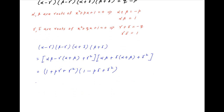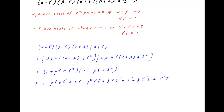Opening this up, we get 1 minus p·delta + delta² + p·gamma minus p²·gamma·delta + p·gamma·delta² + gamma² minus p·gamma²·delta + gamma²·delta².